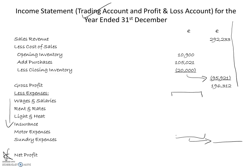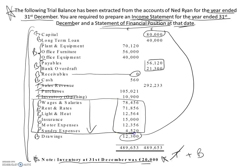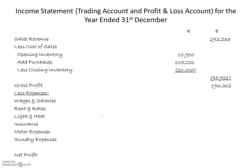Popping in those numbers, going back to the trial balance to refresh: wages and salaries $78,456, rent and rates $71,856, and so on down. I am just transcribing these numbers straight out of the trial balance. When I have them all in, I will add them up, bring the total out, line it up underneath the gross profit figure, take it away, and I get my net profit. In this case, we have a net profit of €1,560. That completes the income statement.